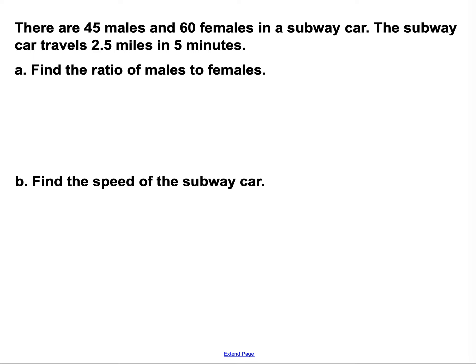Our situation here is: there are 45 males and 60 females in a subway car. The subway car travels 2 and a half miles in 5 minutes. The first question says find the ratio of males to females. There are three different ways you can write ratios: with a colon, with a fraction bar, or with the word 'to'. I'll write it with a colon: 45 males to 60 females. You could also write 45 to 60, or 45 over 60 with a fraction bar — either is fine.